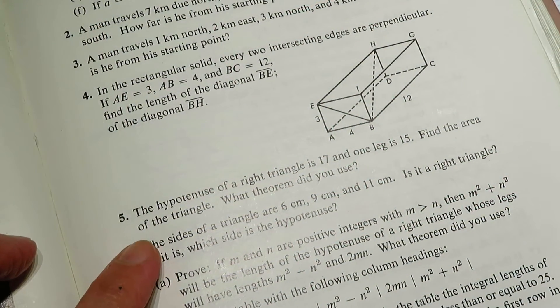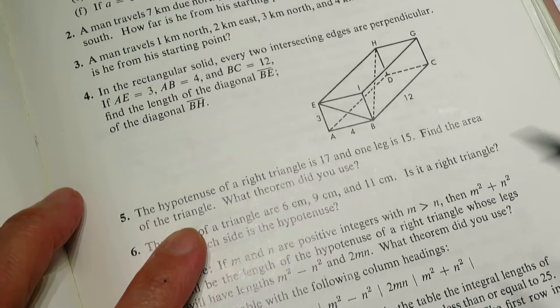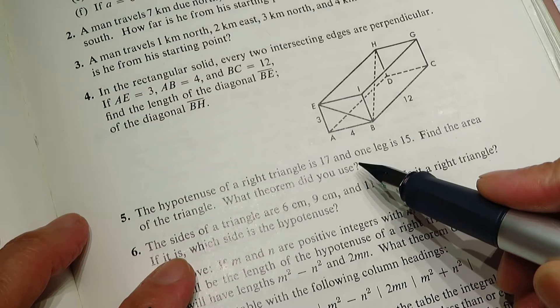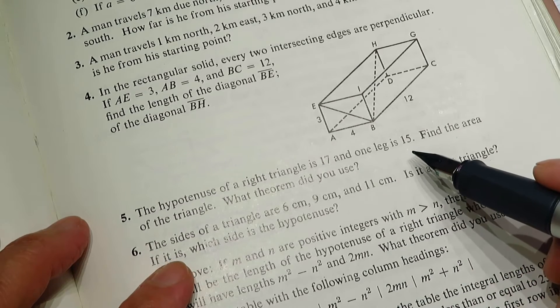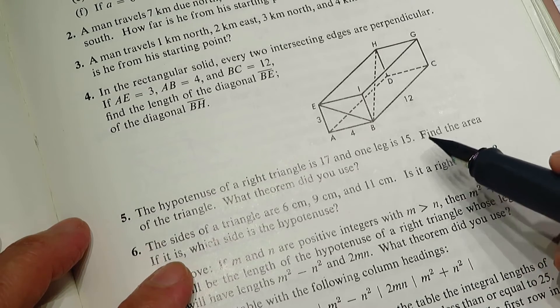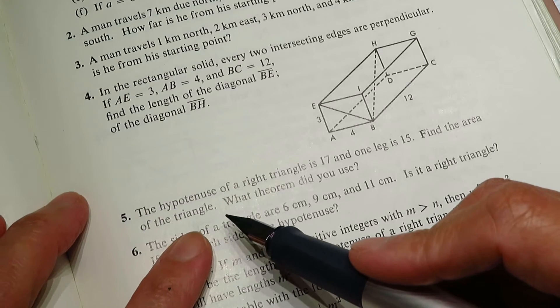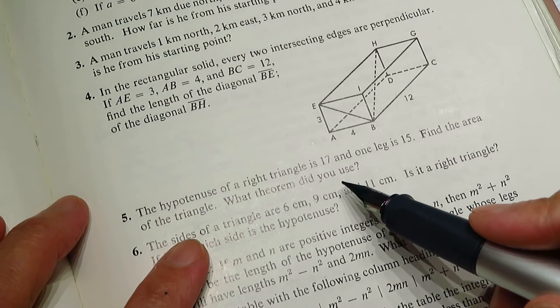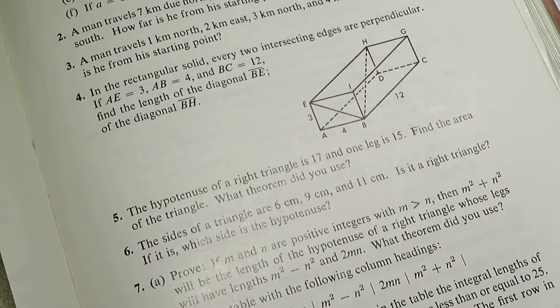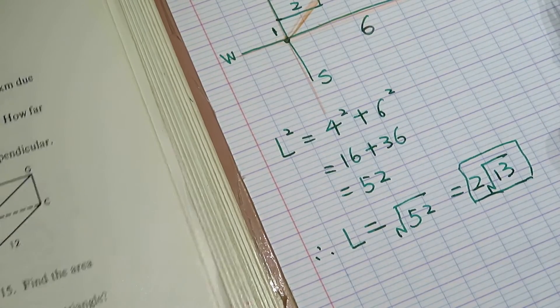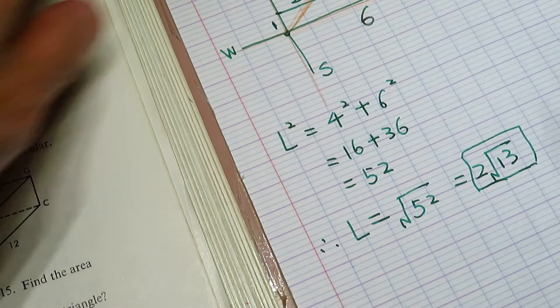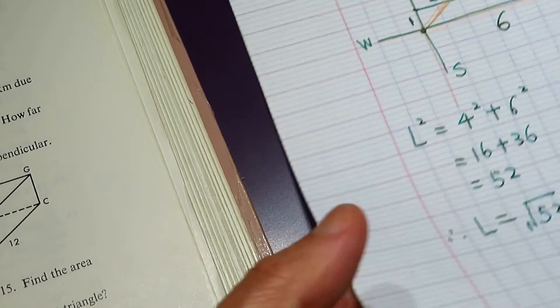Question number five: The hypotenuse of a right triangle is 17 and one leg is 15. Find the area of the triangle. What theorem did you use?